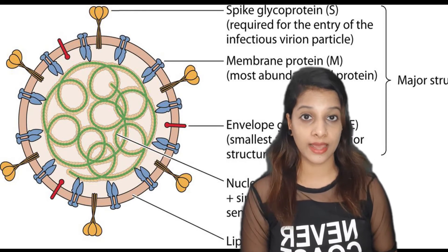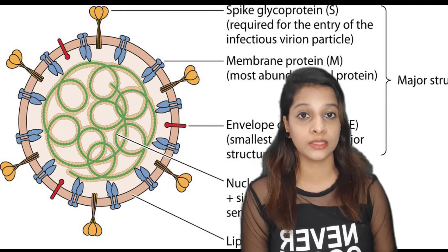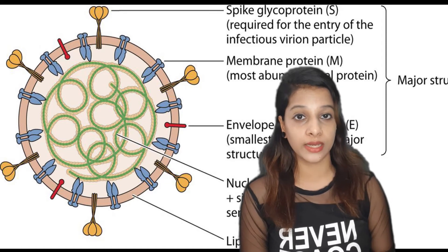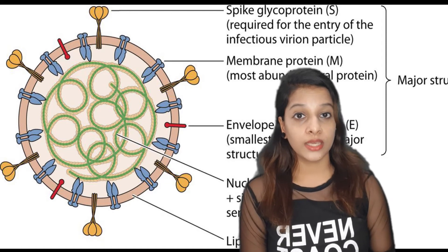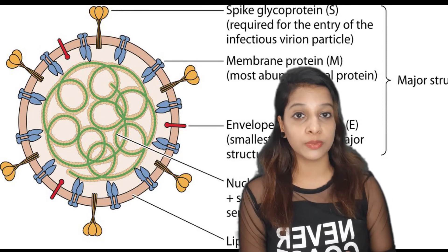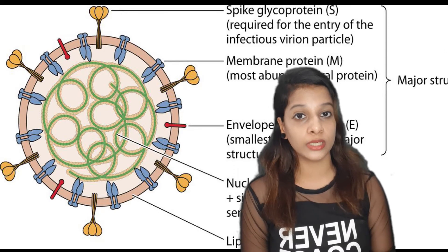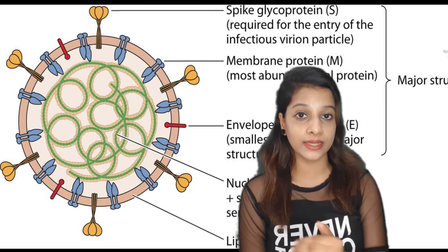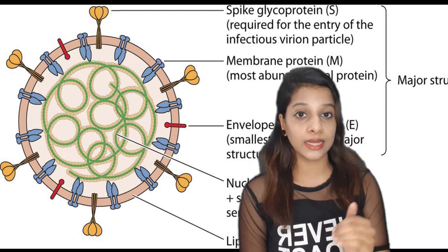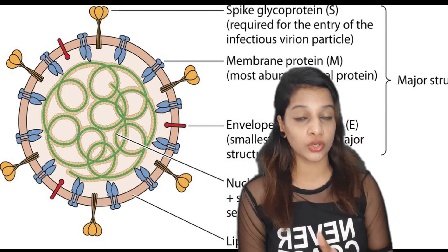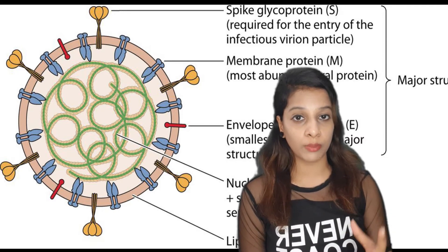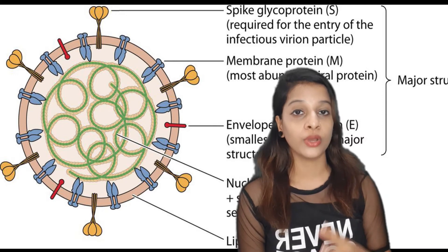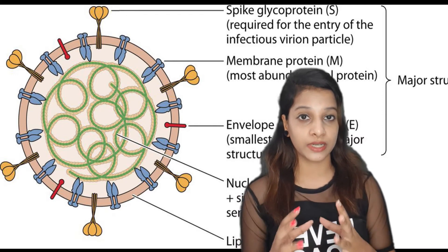There is ACE2 — angiotensin converting enzyme 2. There is also TMPRSS2, a transmembrane protease serine 2. ACE2 is used by the virus; it is cleaved and used to allow the coronavirus to enter our cells. This is the first step of how we get the virus.